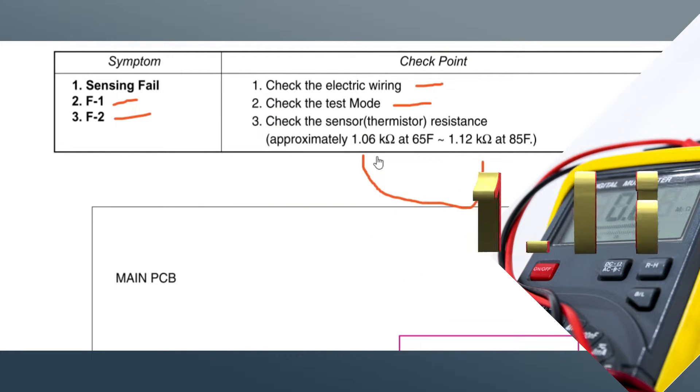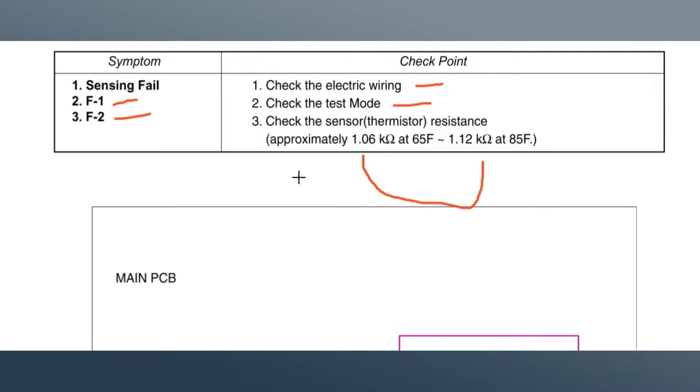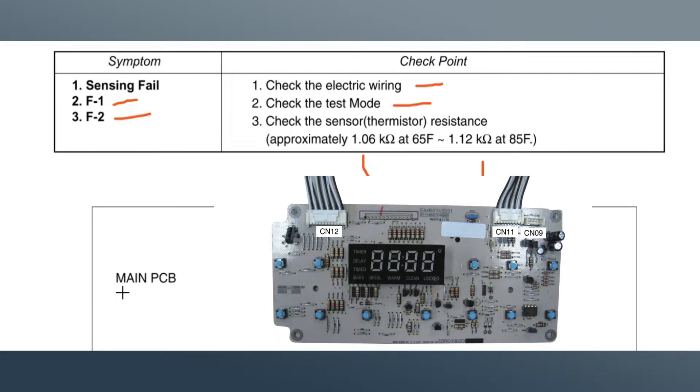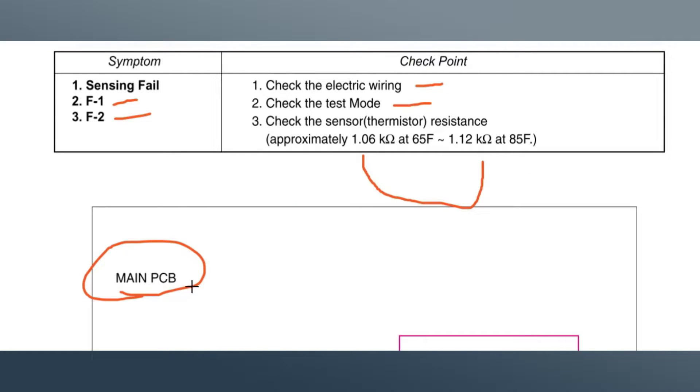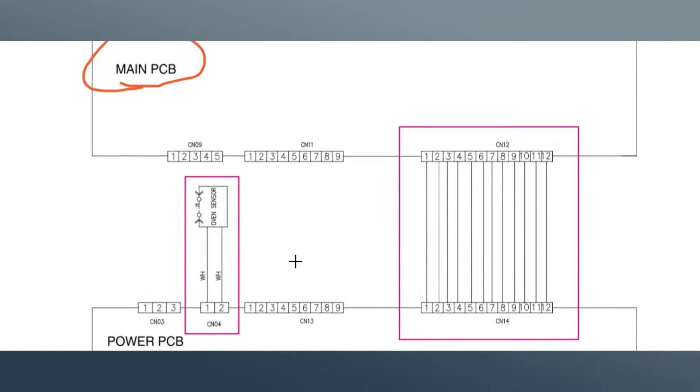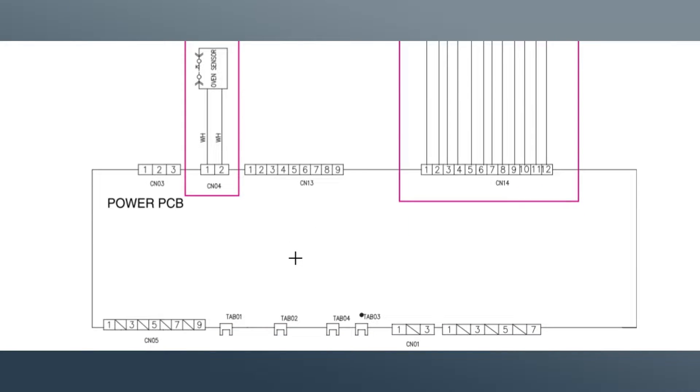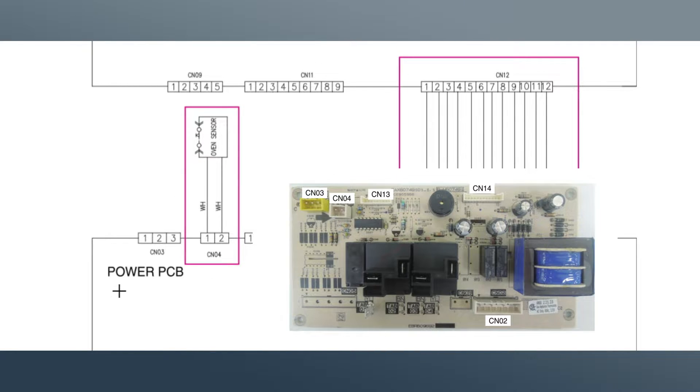So on your multimeter, if it's digital, it should be like 1.06 in this range. Right here you have the main control board, and right here you have the PCB. Right here is your oven sensor. So this will be the first thing we will check because this is what the error code indicates that's bad.